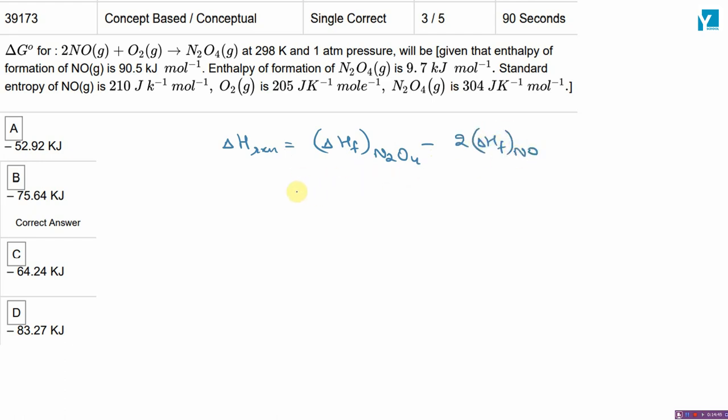Put the values here. If you put the values, this will be 9.7 minus twice of 90.5. Delta H of the reaction you will get.